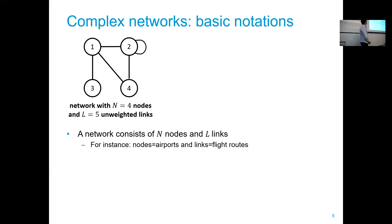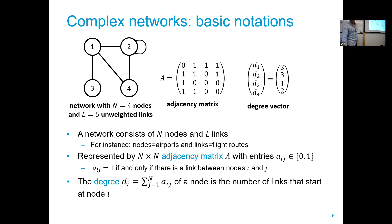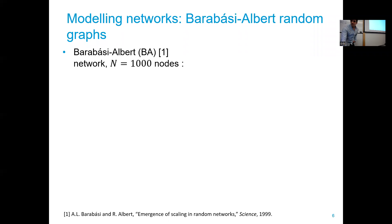Starting with basic notation: we have a network with N nodes, L links. Nodes can correspond to airports, and links to flight routes, as in the global flight routes example. We represent this network compactly as an adjacency matrix — N columns by N rows — where a 1 or 0 indicates presence or absence of a link. An important metric is the degree: the number of outgoing links on a node. For example, node 3 has one outgoing link, node 1 has three.